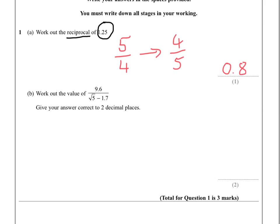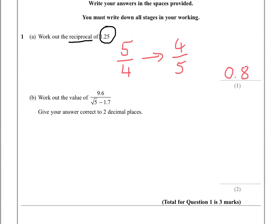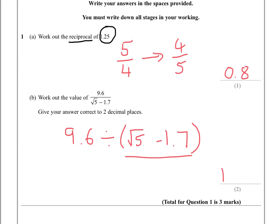For those of you who are at C and maybe bottom of B grade targets. Next one — this is just, can you use your calculator? So I do 9.6. This is what you type into the calculator. You must put the bit in brackets on the bottom, the denominator. Otherwise it will only divide by the root 5 and not the minus 1.7, so you must put this bit in brackets. Stick that in your calculator and you get 17.91. It says to do it to 2 decimal places.